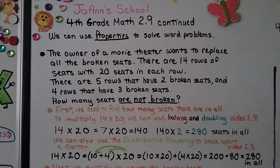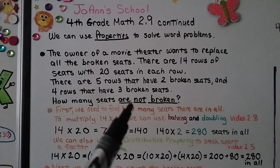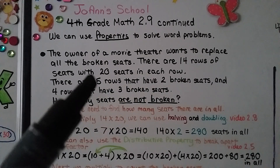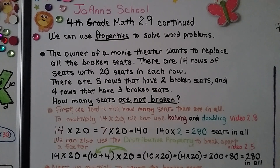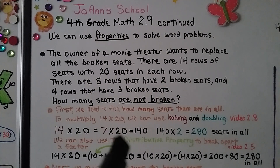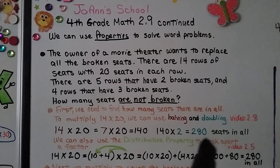We can use properties to solve word problems. The owner of a movie theater wants to replace all the broken seats. There are 14 rows of seats with 20 seats in each row, five rows that have two broken seats, and four rows that have three broken seats. How many seats are not broken? First we find the total seats: 14 times 20. Using halving and doubling, we cut 14 in half to 7, multiply to get 140, then double it — 140 times 2 is 280 seats in all.